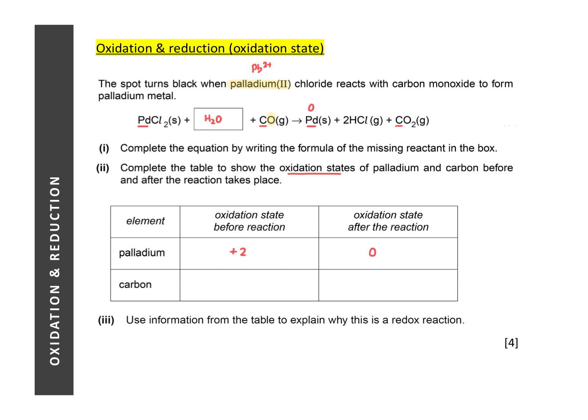So carbon in carbon monoxide has an oxidation state of +2. After the reaction, we get carbon dioxide. Again, the sum of oxidation states equals zero; since oxygen has an oxidation state of −2 and there are two oxygen atoms, carbon must have an oxidation state of +4. From these oxidation states, palladium has been reduced because its oxidation state decreased from +2 to zero, whereas carbon has been oxidized because its oxidation state increased from +2 to +4.